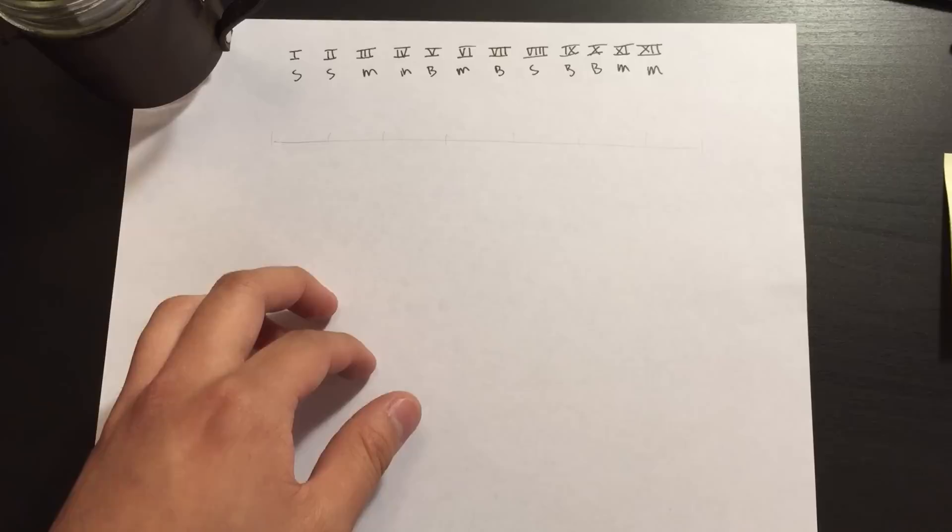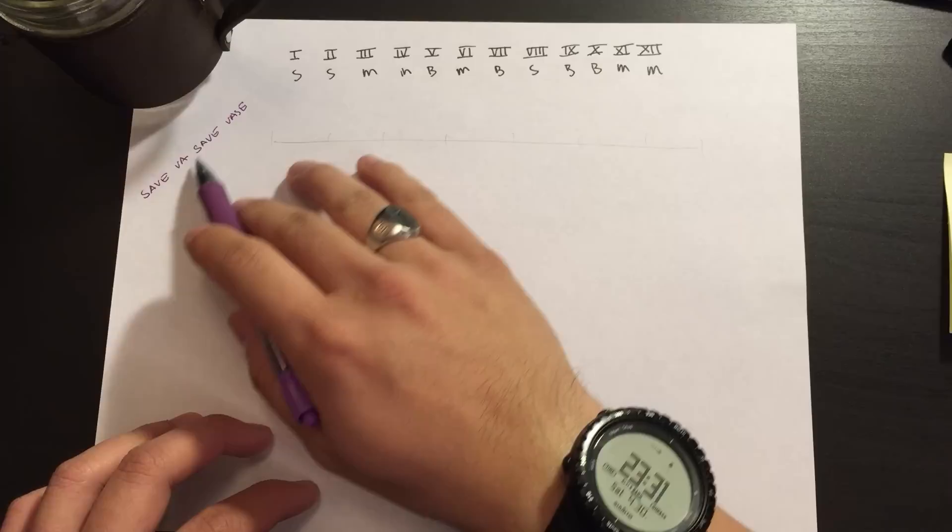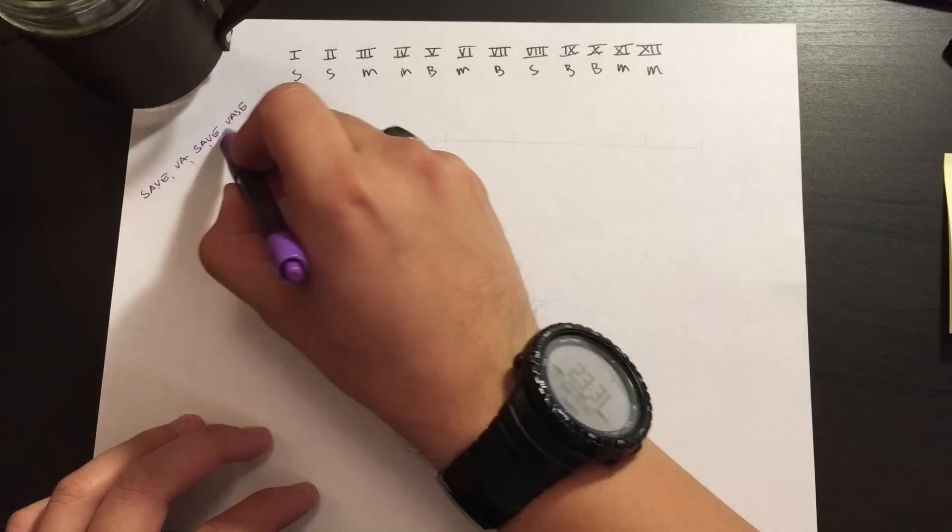So the first part of this mnemonic is to remember this phrase: save V save face. If you divide these into every two letters, these are the tailing two letters of each of the categories.